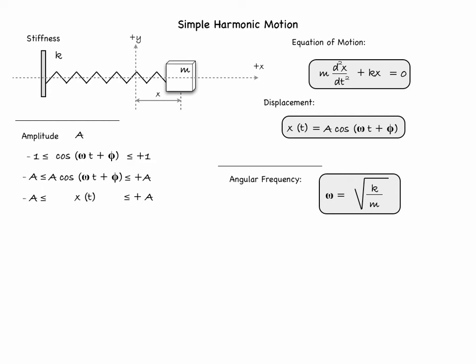The angular frequency omega must equal the square root of K over M for the displacement to be the solution to our equation of motion. Being inside the argument of the cosine function, it must have units of radians per second, identical to that of angular velocity. Only here it is called angular frequency. Its value determines how fast the argument increases, and therefore how fast the cosine changes — so it is directly related to the period and frequency of oscillations.